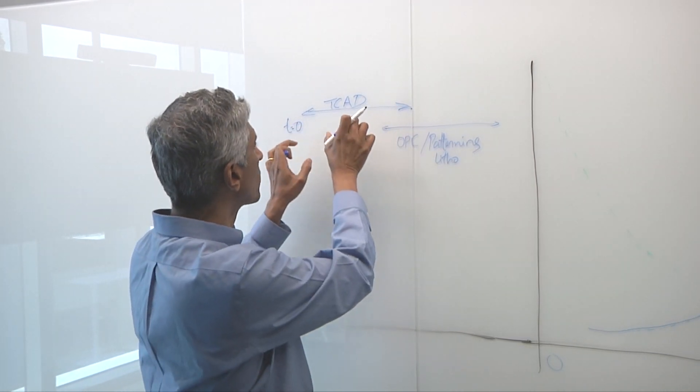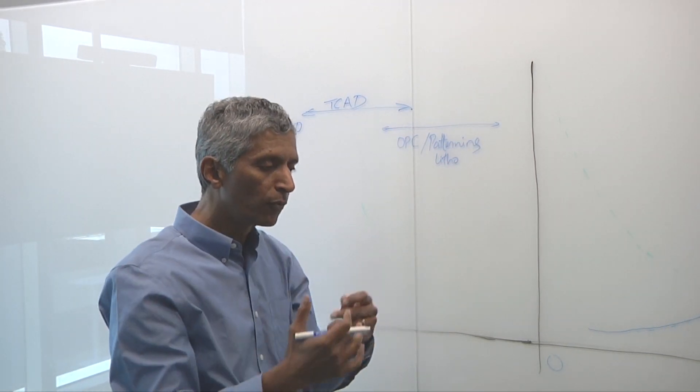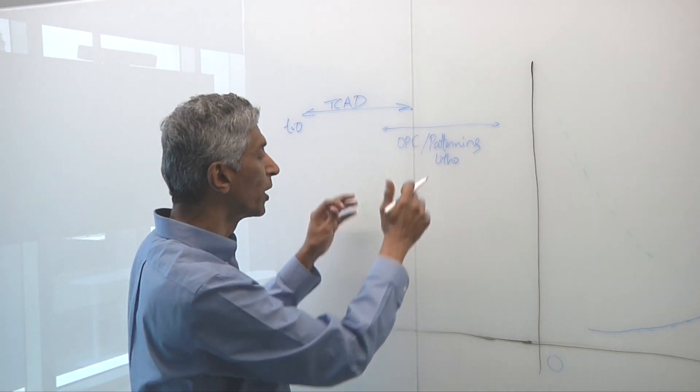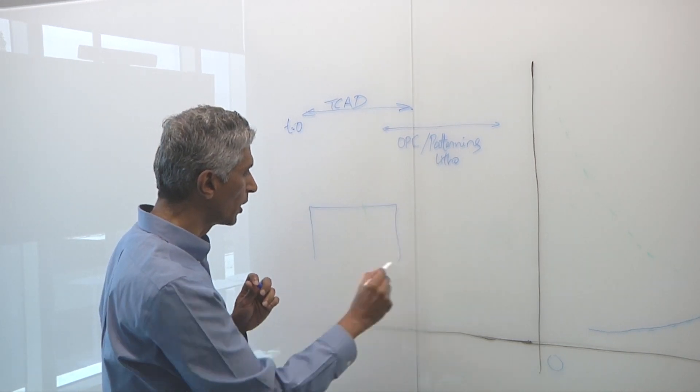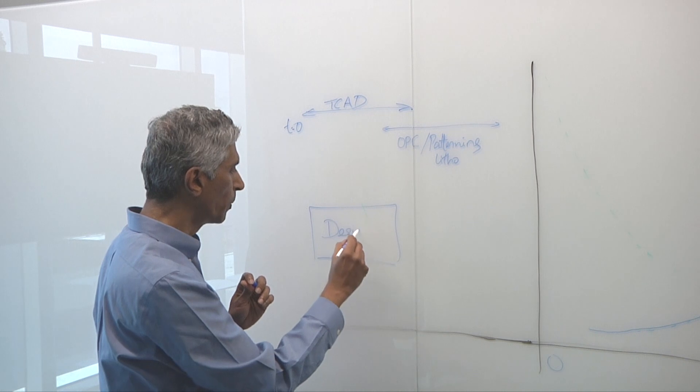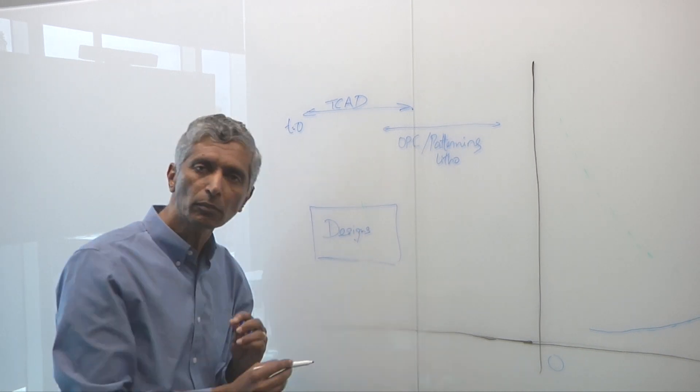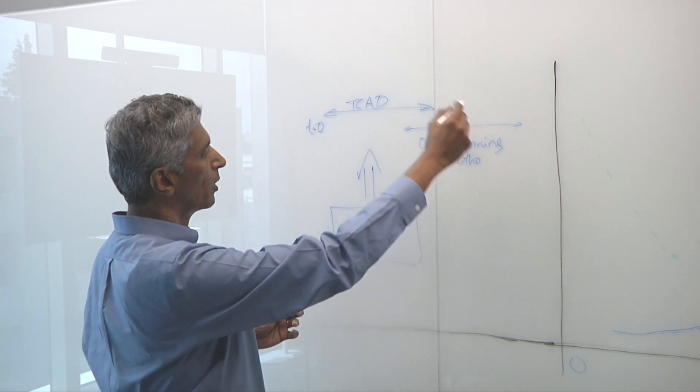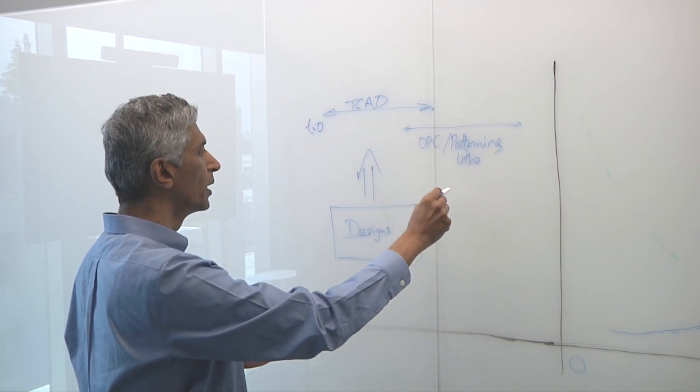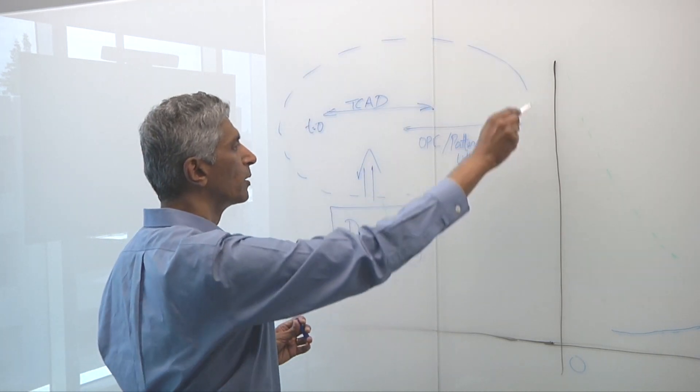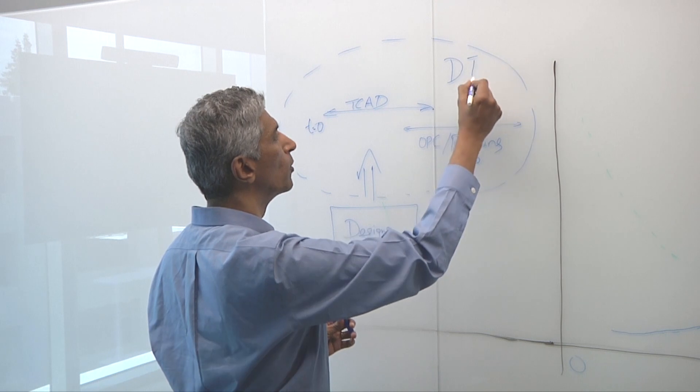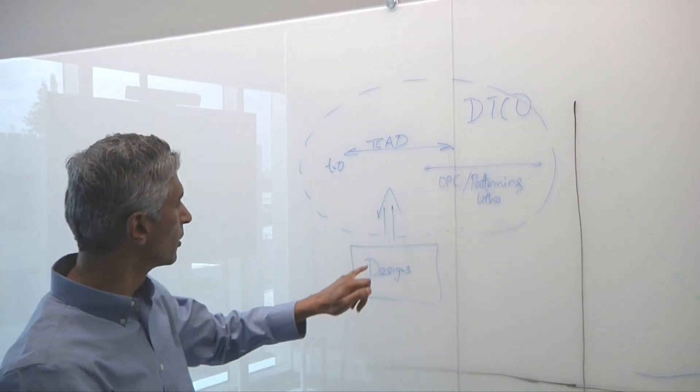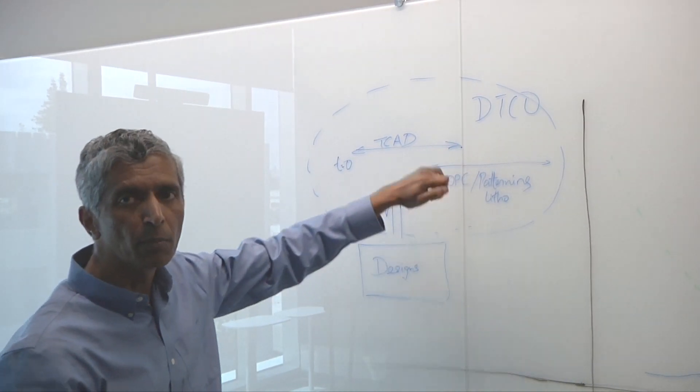So think of TCAD and OPC as the first two things you have to do to get your process development going. Well, as this is maturing, then of course we have to ask ourselves, what kind of designs do we plan to manufacture? And you bring that insight into this mix of TCAD and OPC. And then this mix is what you've begun to call DTCO. This is design technology co-optimization. This is design, this is technology, you've been co-optimized.